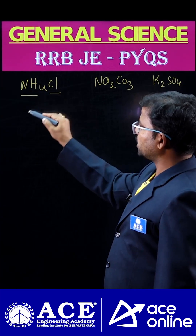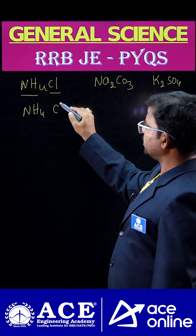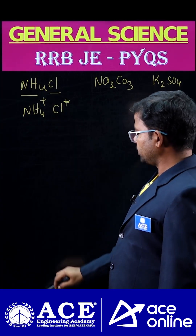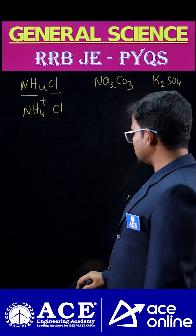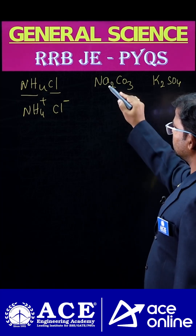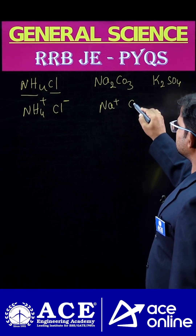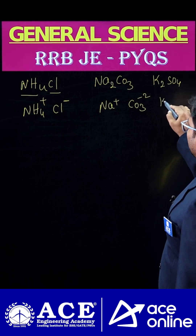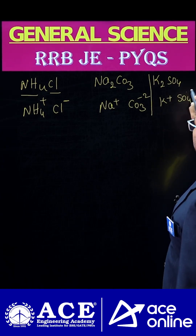First we have to ionize these chemicals. NH4Cl gives NH4+ and Cl-. Chlorine is a non-metal, so it always attains a negative charge. Na2CO3 gives Na+ and CO3 2-. K2SO4 gives K+ and SO4 2-.